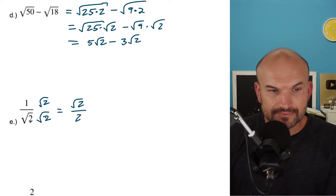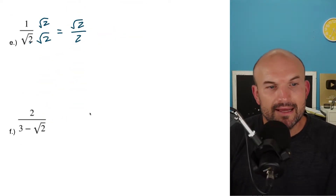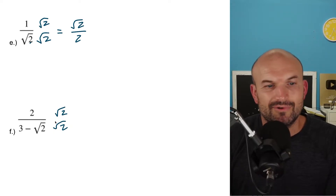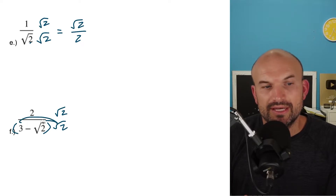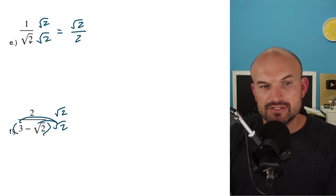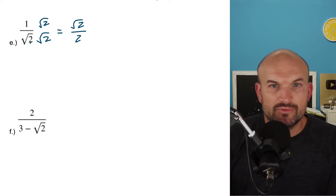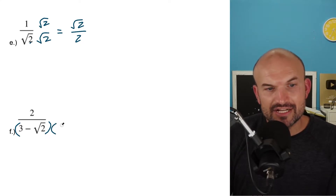One key mistake students make: they see a problem like this and think to just do the same thing again. But no — by the distributive property, you have to multiply the square root of 2 into both the 3 and the negative square root of 2. Even though you'd get rid of the radical in one term, you won't when multiplying it by 3. So in this case, we need to multiply by the conjugate. So 3 minus the square root of 2 has a conjugate of 3 plus the square root of 2, and we multiply that on both the top and the bottom.